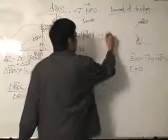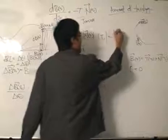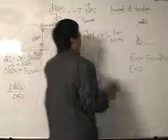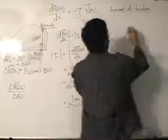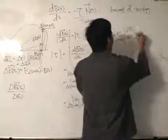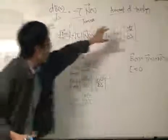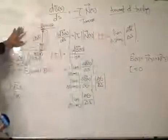Rewriting it, the magnitude of the torsion is the limit as change in S tends towards zero of the magnitude of change in theta over change in S. That is the magnitude of the torsion. So, relating what we have over here with what we have over here, it says